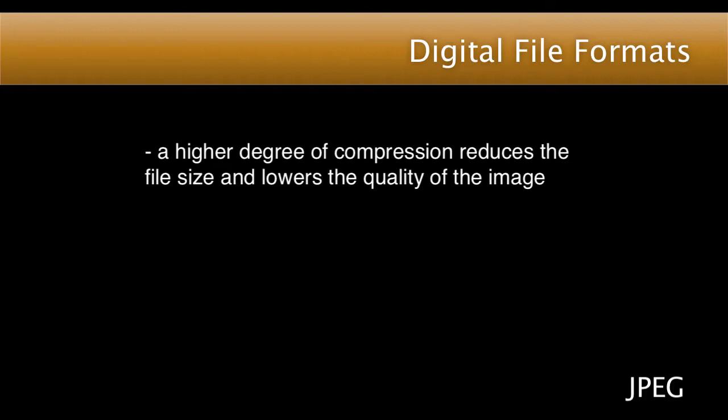All digital cameras allow for a variety of JPEG compressions. A higher degree of compression reduces the file size, but it also lowers the quality of the image. The quality of highly compressed JPEG images is fine for the web, though the reduced quality would be very noticeable in a print enlargement. If you capture a shot at the highest JPEG compression, the largest print you might be able to make is a 4x6. Reducing the compression will allow you to print enlargements of 16x20 or larger.